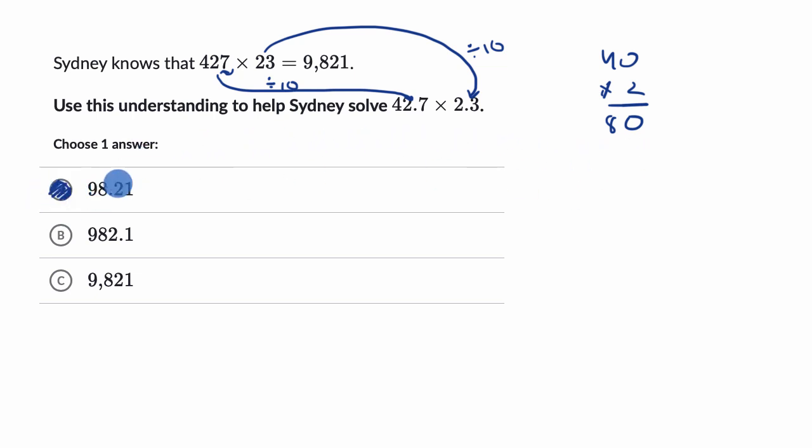Now, how do we really feel good about this? Well, as I just said, when I took 427 times 23, it equals 9,821. But to go from that to 42.7 times 2.3, you have to divide by 10 twice. So if you start with 9,821, this product over here, and if we were to divide by 10 twice, you would move the decimal two to the left, you'd get 98.21, which is exactly what we chose.